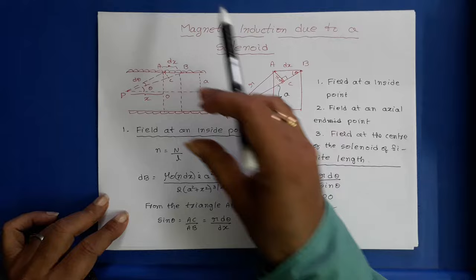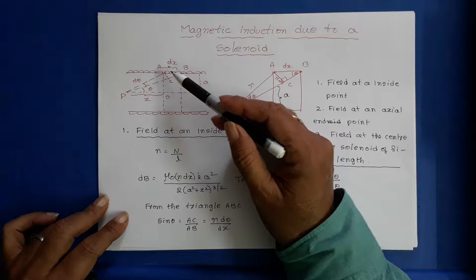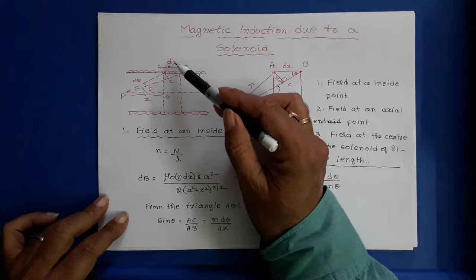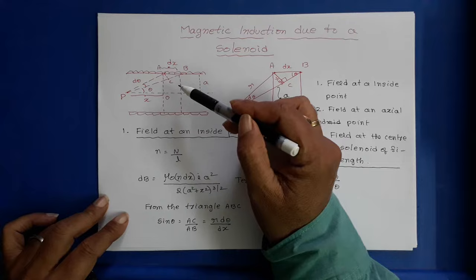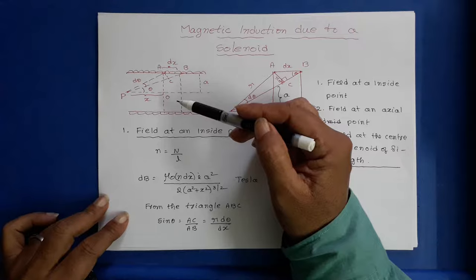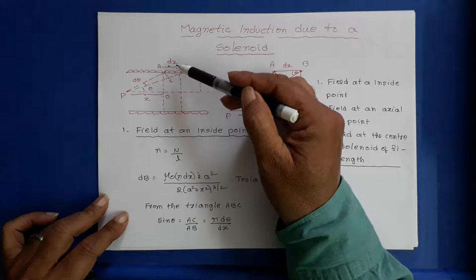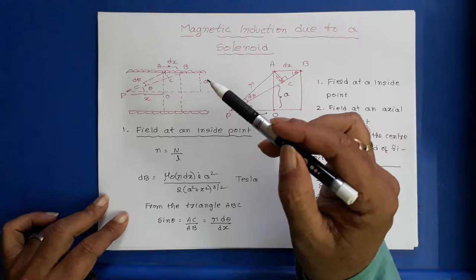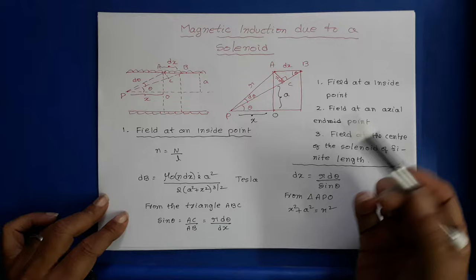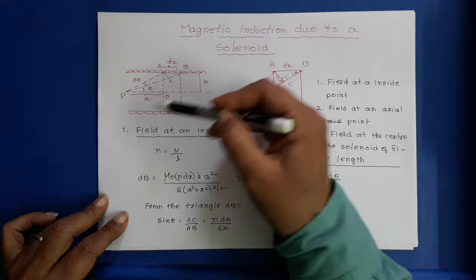Imagine the entire solenoid is divided into a number of small coils. Consider one such coil AB with width dx. The number of turns per unit length is small n, and its width is dx, so it contains n·dx turns. This small coil carries current I. The magnetic induction at point P due to this small coil is given by dB.